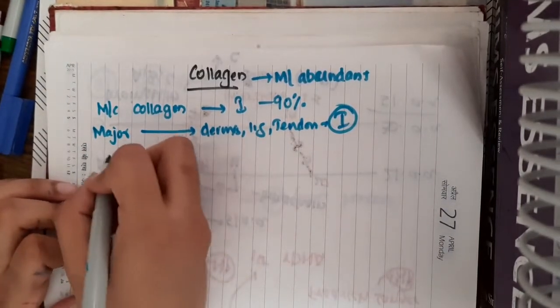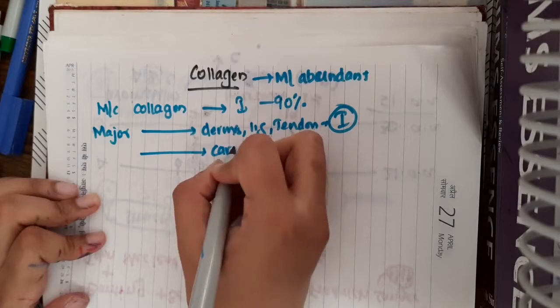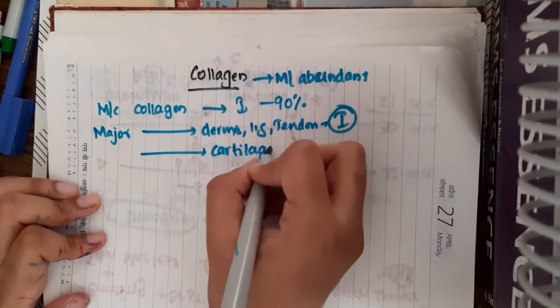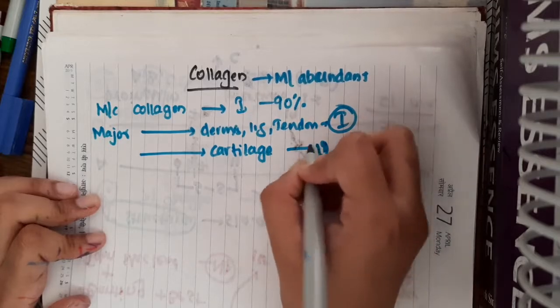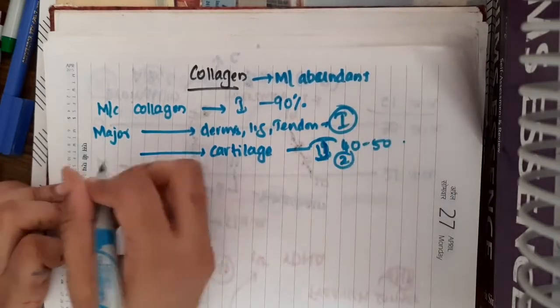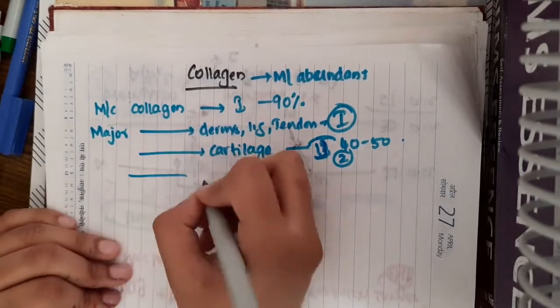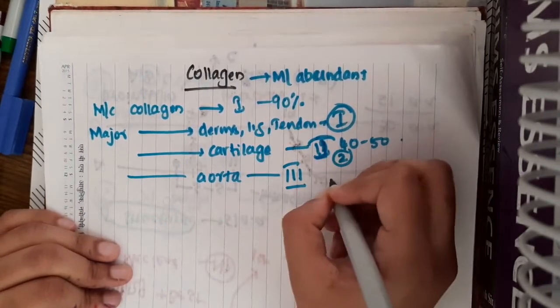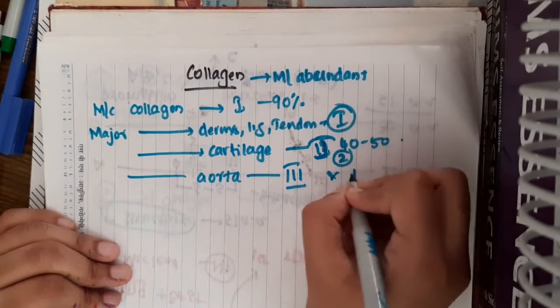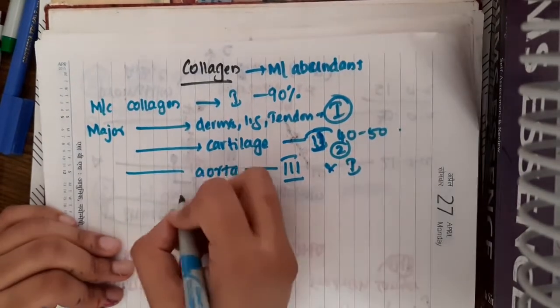Major collagen which is present in cartilage is type 2 collagen, around 40-50% is present in cartilage. Then, major collagen which is present in aorta is type 3 collagen and type 1 collagen.